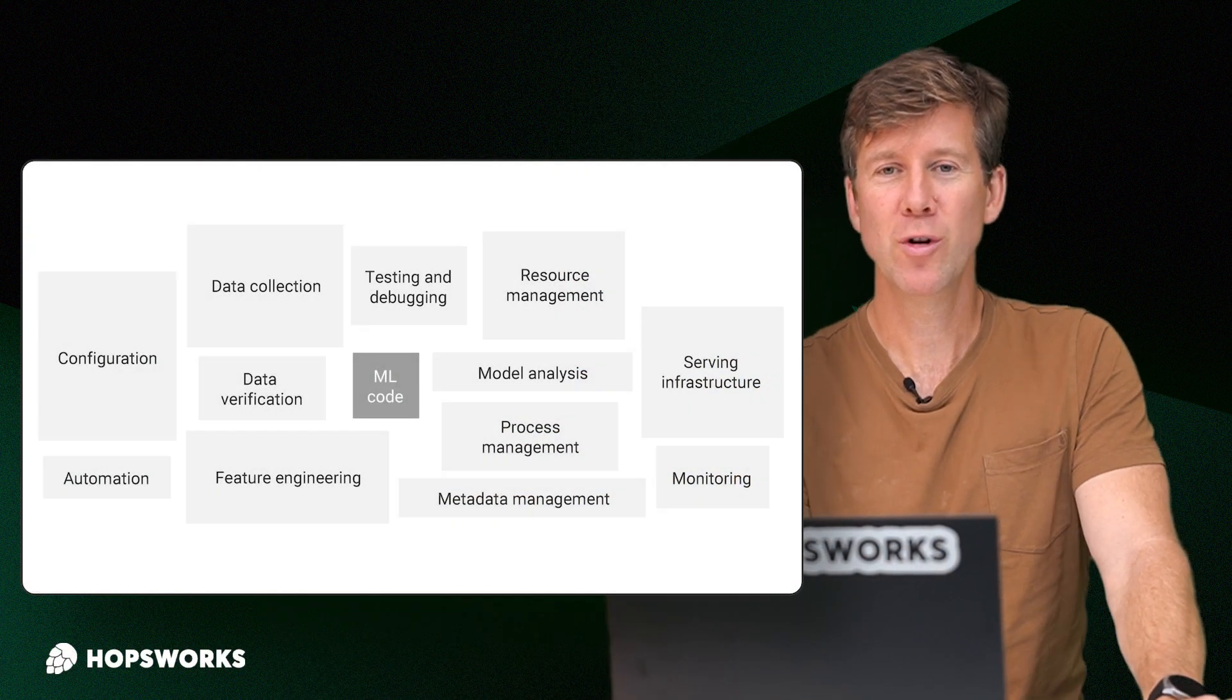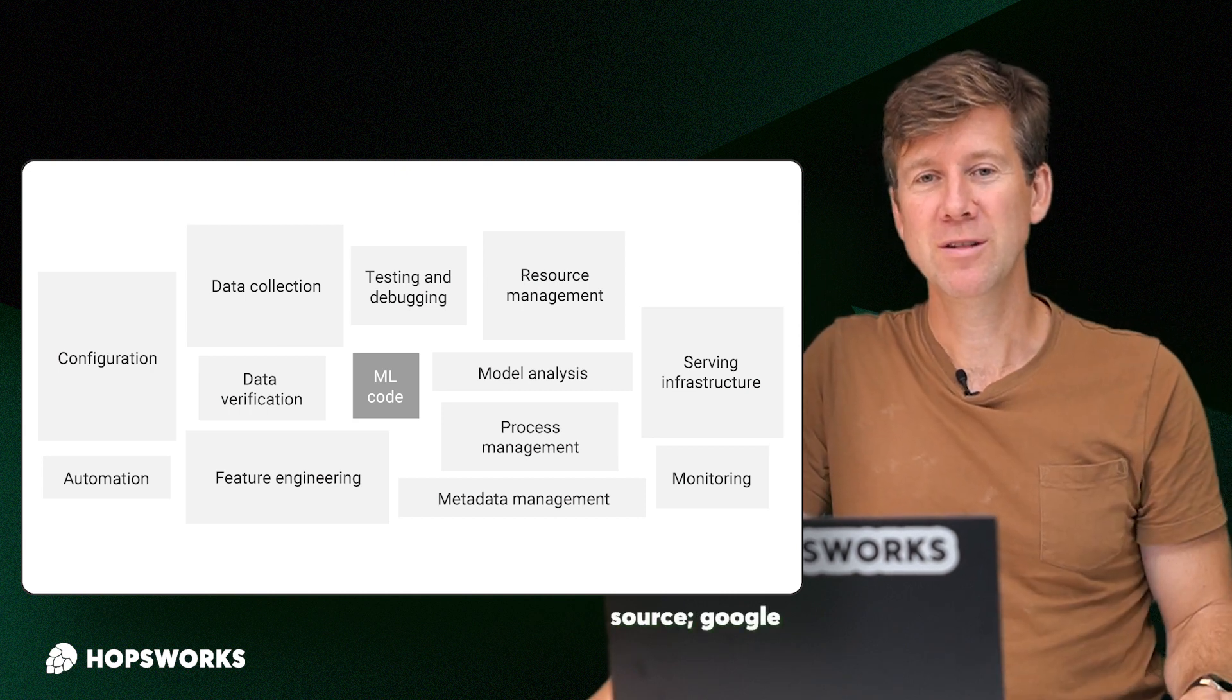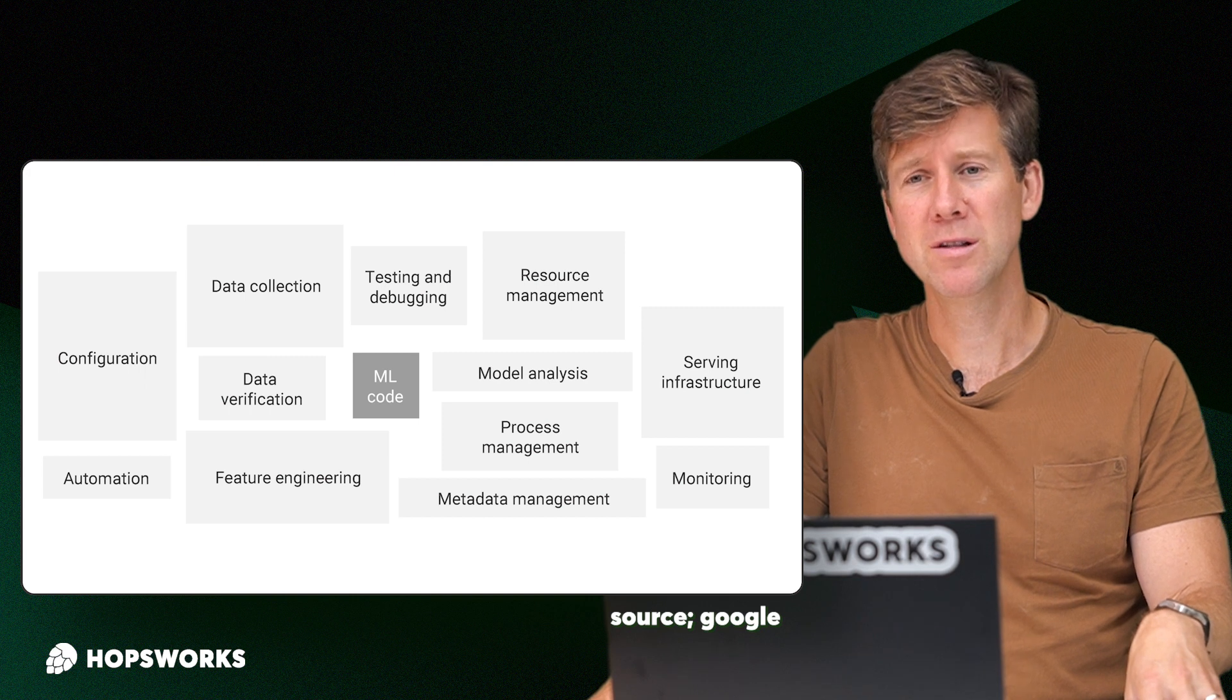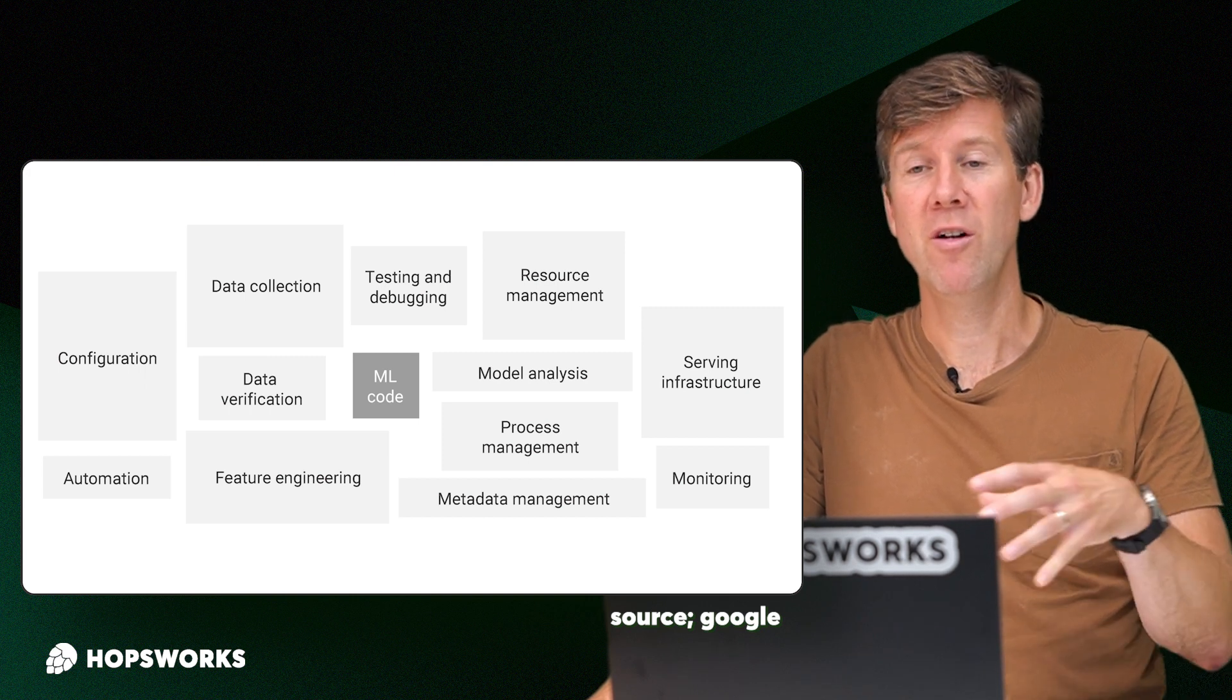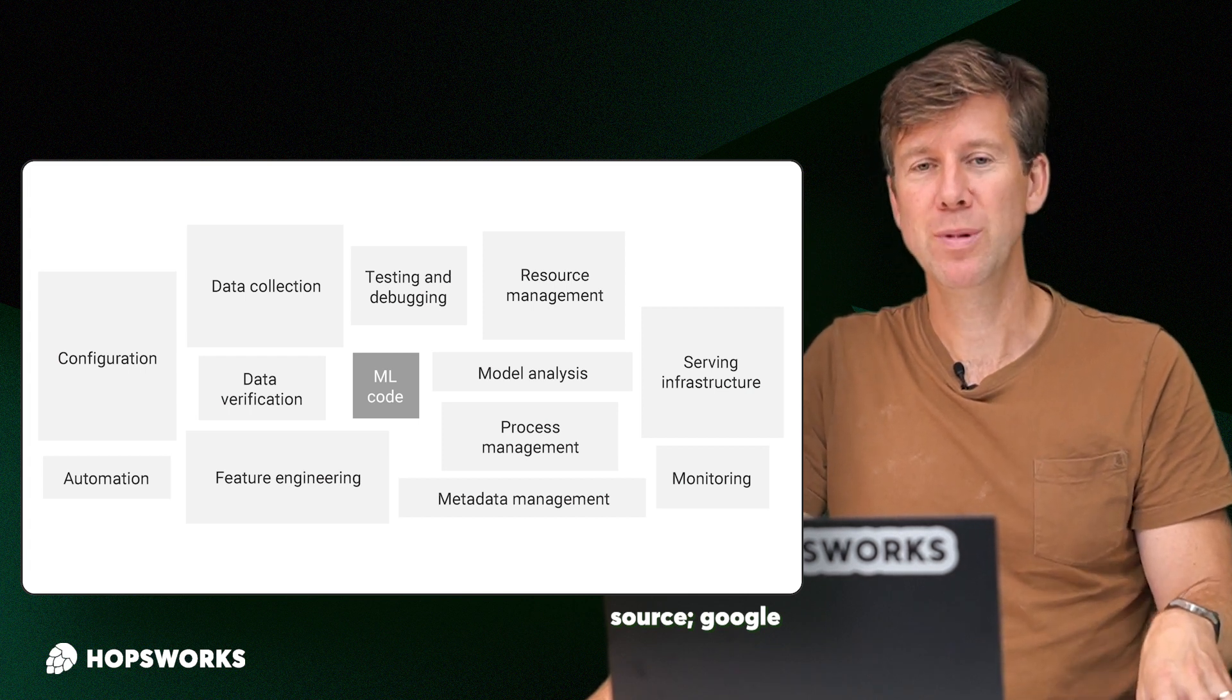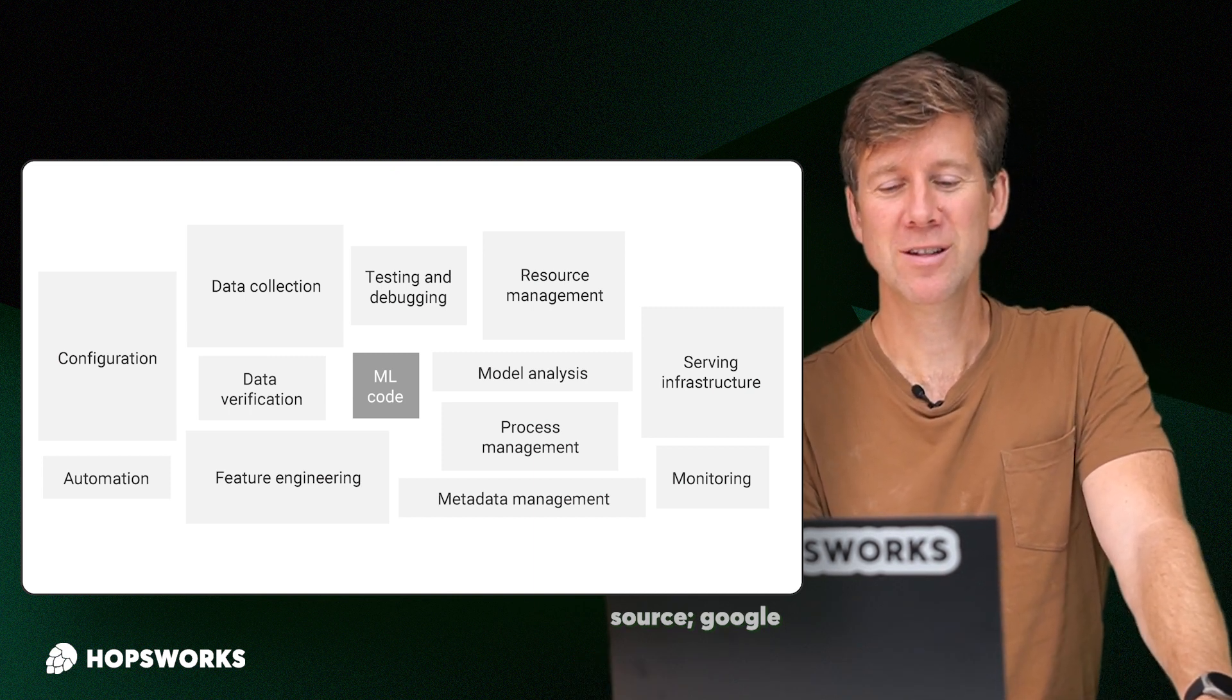We're going to focus on building these three pipelines with the infrastructure provided by Hopsworks. So how did we get to this particular model? We started out many years ago understanding that machine learning system construction was difficult. This image from 2015 by Google became very well known and it showed basically that training a machine learning model is only a tiny part of building a machine learning system. The unfortunate part about this is it doesn't really give you a map for how to build a machine learning system.